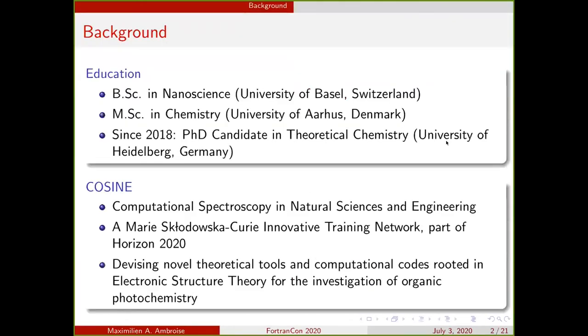As I was introduced, I started in nanoscience on an experimental side before moving to chemistry and finally to theoretical chemistry at the University of Heidelberg. I'm part of an EU network, a Marie Curie innovative training network, which is part of Horizon 2020 and COSINE—science for computational spectroscopy in natural sciences and engineering. It's about devising novel theoretical tools and computational codes for electronic structure theory and investigation of organic photochemistry. Just to plug my network here and to satisfy the EU people who finance me.